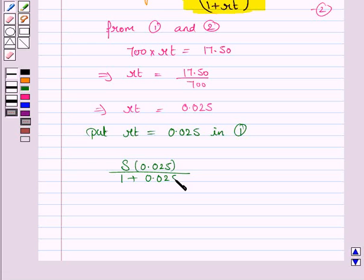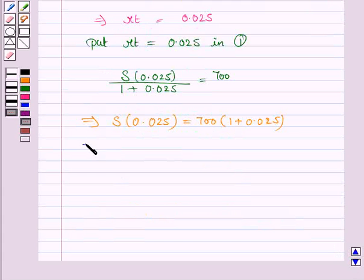This implies S into 0.025 is equal to 700 into 1.025.